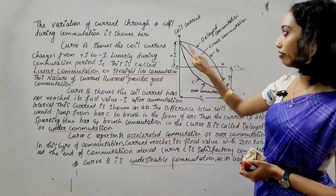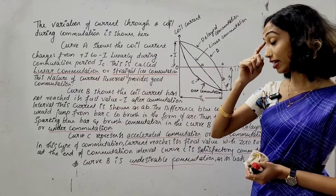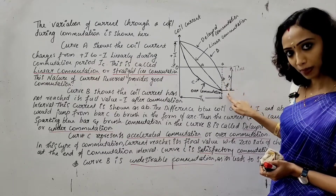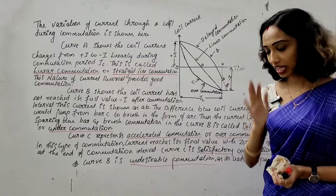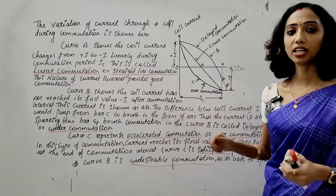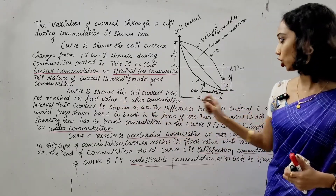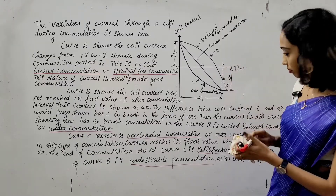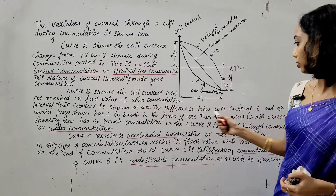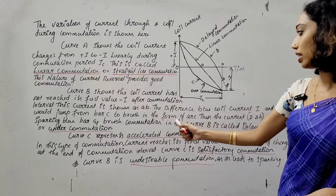Curve B shows the current has not reached its full value minus I after commutation is achieved. Full commutation is not achieved. The difference between coil current I and the curve AB causes a current jump from the commutator bar to the brush in the form of a spark.